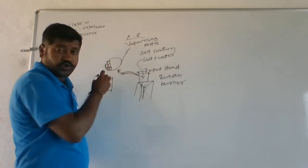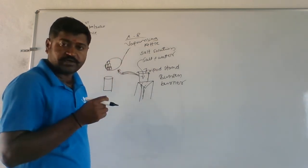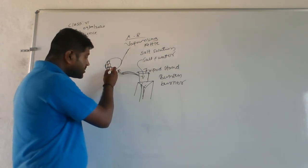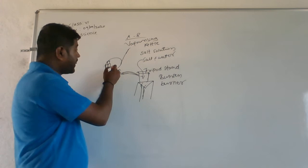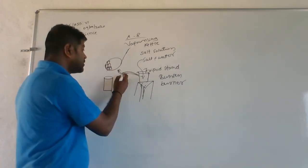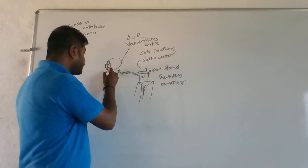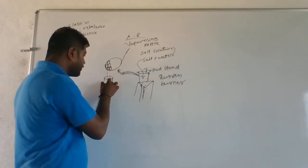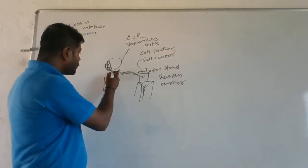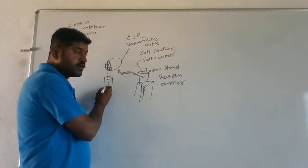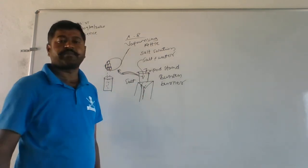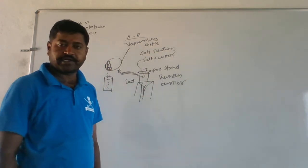We have placed one pan which is having ice cubes in it. Whenever this steam is touching this pan - and in that pan there are ice cubes - this gaseous form is going to touch the pan and it forms in the form of liquid in the beaker. So here we find only water is stored in the beaker, and inside the kettle only salt is left behind.